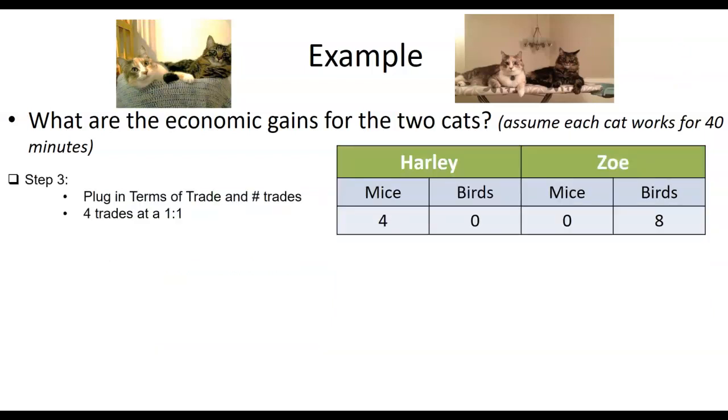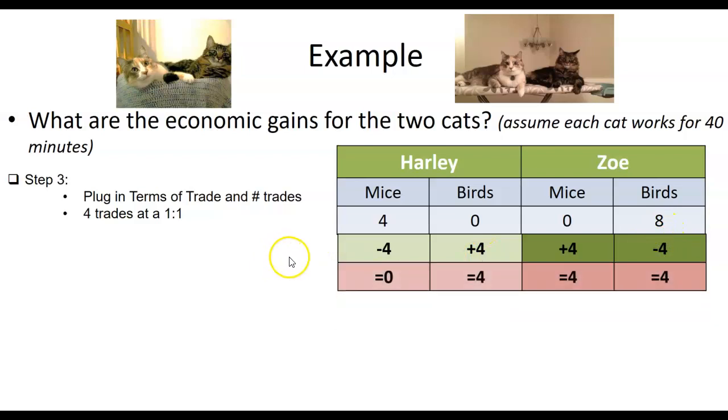What do we do next? Plug in. So we're going to plug in the terms of trade and the number of trades. We were doing four trades at a one to one ratio. So after four trades, Harley's going to trade those four mice. Those are going to travel over to Zoe. In exchange, Zoe's going to take those four birds, put it over here, sum those up, and you end up with those numbers.